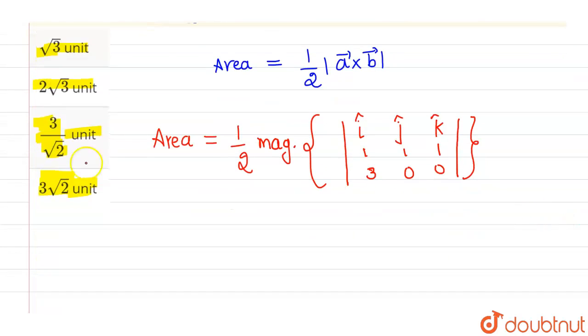Now if I try to simplify this then I will be getting area as area equals to half into magnitude of this particular determinant. If I evaluate this determinant then I will be getting i cap into 0 minus 0 minus j cap into 0 minus 3